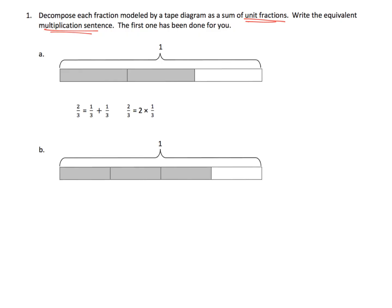Our first example is two-thirds. The whole thing is one whole, it's been chopped up into three equal-sized pieces, and there's our two. So our sum of unit fractions is one-third plus one-third, and since we have two of them, that could be two times one-third.